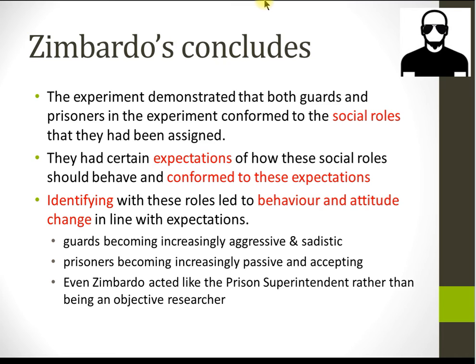The experiment was called off after just six days, even though it was supposed to run for two weeks, because of ethical concerns. Increasingly aggressive behavior on the guards' side was the main issue, but the visible stress being caused to the prisoners was also a factor. Remember, these participants were randomly allocated, so there was an equal chance of being either a guard or a prisoner.